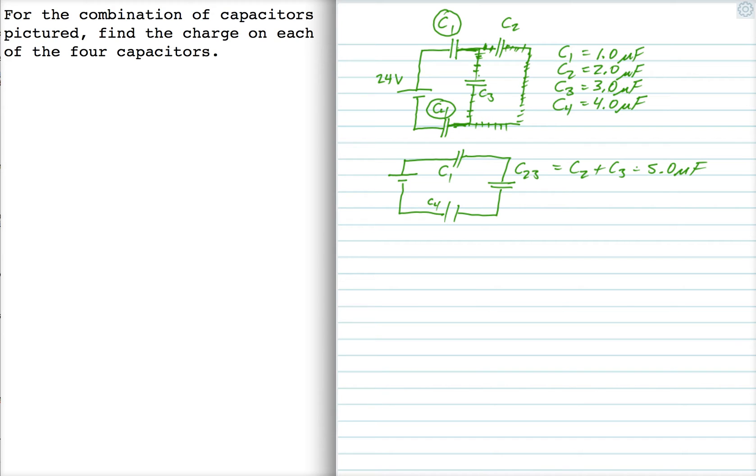And then my next step would be to combine all three of these capacitors into a single equivalent capacitor, which is C total. Now C1, C2, C3, and C4 are in series, so 1 over C total is going to be 1 over C1 plus 1 over C2, 3 plus 1 over C4. So when I do that calculation, I get C total is 0.69 microfarads.